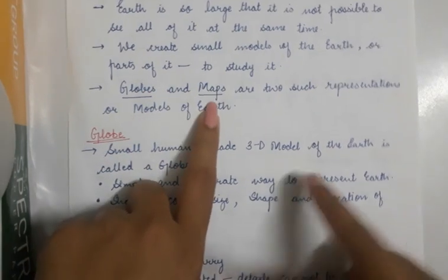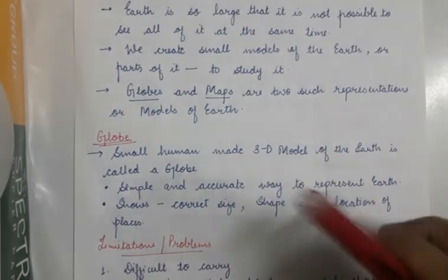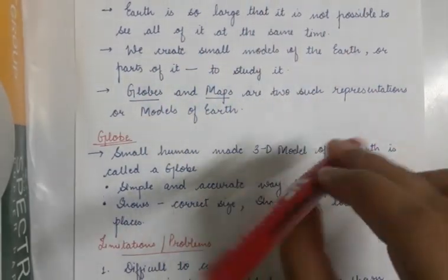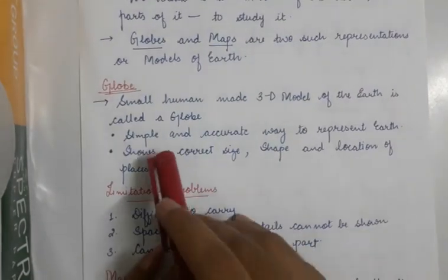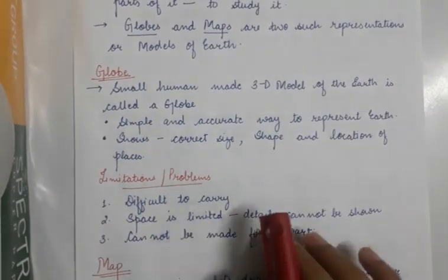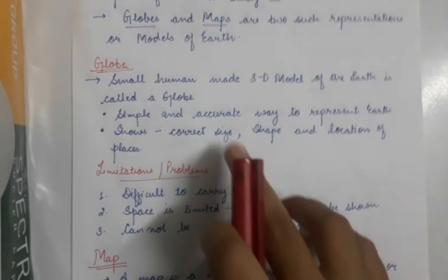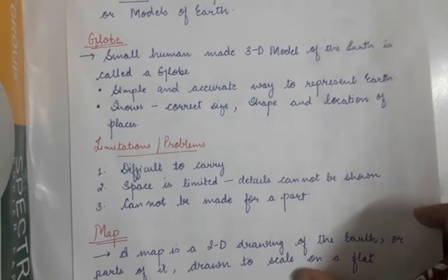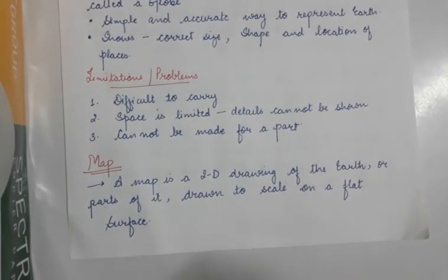There are two different types in which we present the Earth. One is the 3D model — the globe is the 3D model. And this one is the 2D model. All these things written on paper are 2D. If I show you this pen, this is 3D — it has three dimensions. So the globe is accurate and very simple. It looks like Earth, so it is the model of the Earth. It shows the correct size, shape, and location of different places. But there are certain limitations due to which we have to move towards the map.